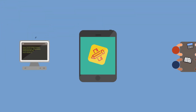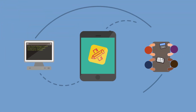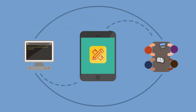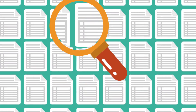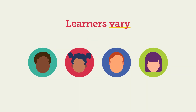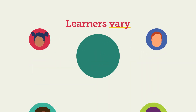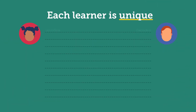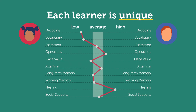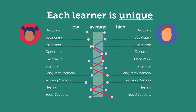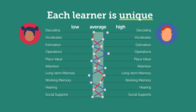Building an EdTech tool is a complex task. With all the demands on product teams, who has time to dig into the latest research on learning to ensure that the product purposefully supports all learners? One important research finding is that learners vary. Learner variability is the simple idea that each learner has unique strengths and challenges that must be understood in order to help them learn best.